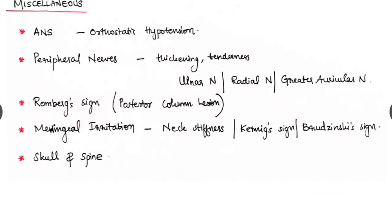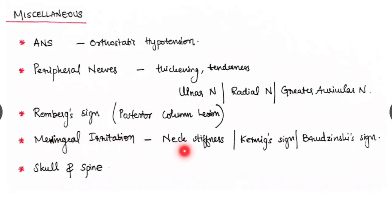And Romberg sign, some used to write it in miscellaneous part. It is seen in posterior column lesion. Signs of meningeal irritation, we look for any neck stiffness. We look for the Kernig sign and Brudzinski sign.